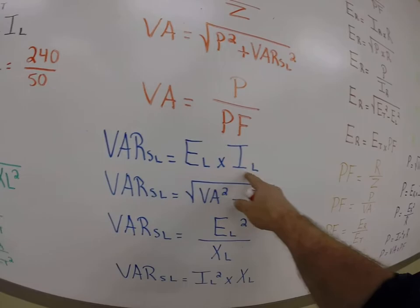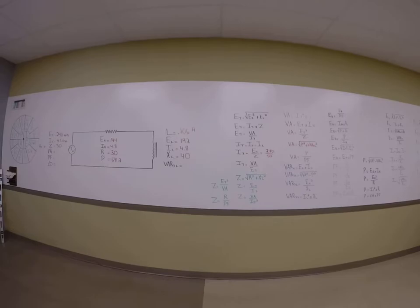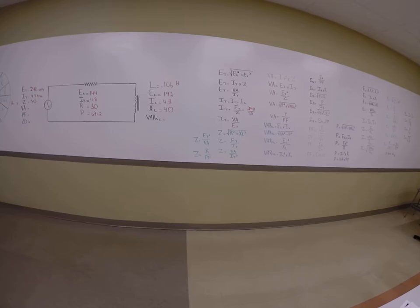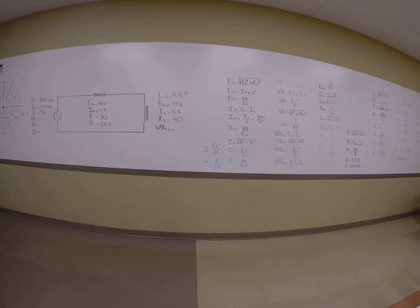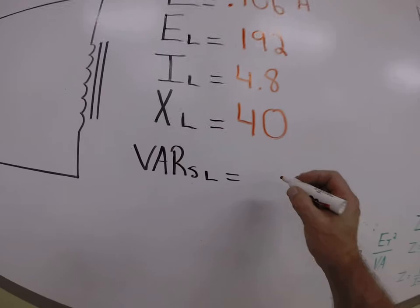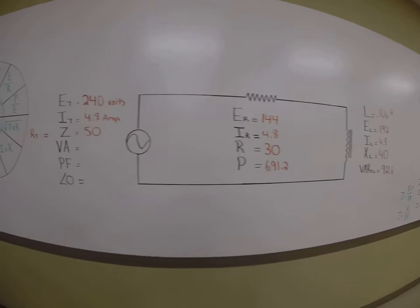So let's do VARs is going to be E times I. Well, my E is 192 and my I is 4.8. So let's put that in the calculator. Using that formula, 192, which is my E. So I'm using volts times amps. VA is synonymous with power or watts, where in this case, across the inductor, it would be VARs. So 192 times 4.8 equals 921.6.